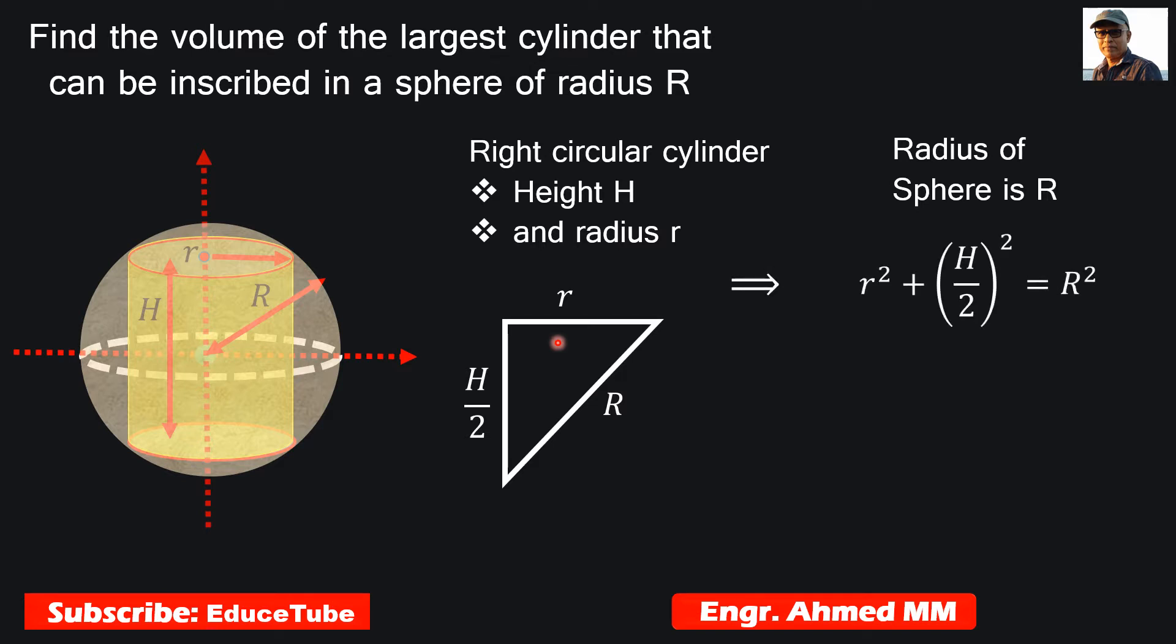Using Pythagorean theorem we can find the relationship: r² + (H/2)² = R². In the next step we can write this, and then easily we can find r² = R² - H²/4. This equation will be used in the volume formula.